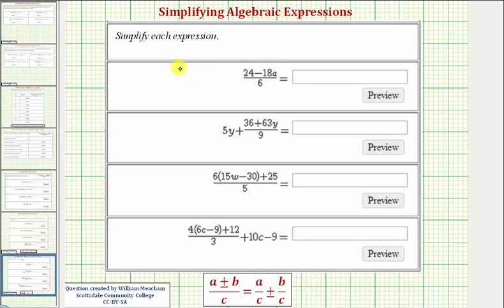So the given expression is equal to 24 divided by 6 minus 18a divided by 6. And now we want to simplify each fraction. Well, 24 divided by 6 simplifies perfectly to 4. 18a divided by 6 simplifies perfectly to 3a. So we have 4 minus 3a, which is the simplified expression.